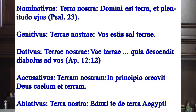In English we use little auxiliary words to express the genitivus or dativus, but in Latin we don't need the words 'of the,' because the declension takes care of that. Sal terre means 'salt of the earth.'